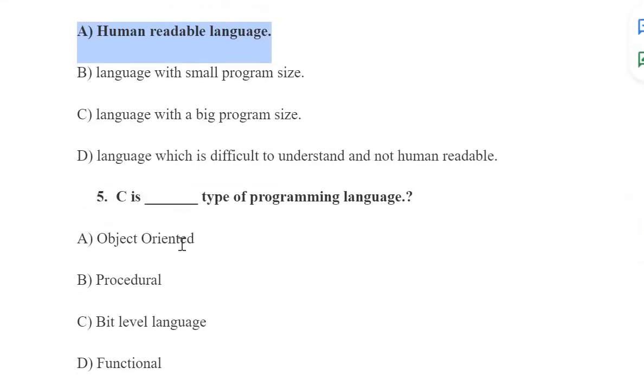Next is: C is what type of programming language? The options are object-oriented, procedural, bit level language, and functional. It is not object-oriented. Procedural, yes, it is a procedural type of programming language. You can check in the previous videos where I discussed various types of programming languages.